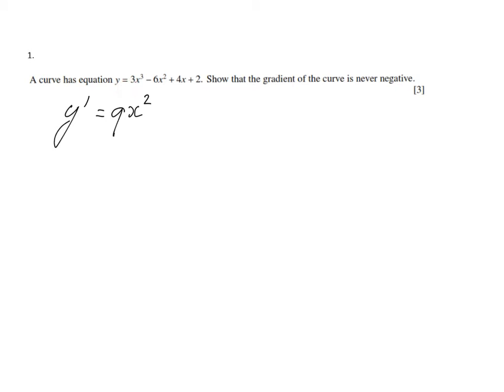So you do 3 times the coefficient and the power always decreases by 1. Minus 6 times 2 minus 12x to the power 1 plus 4, and the constant disappears. So that's the derivative.